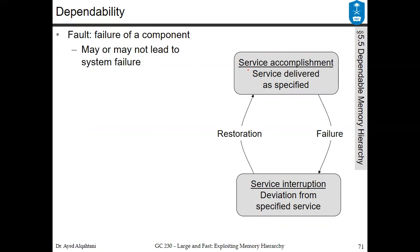You can actually understand the dependability if you look at this sketch where you have a service accomplishment — the service is delivered as specified if you are in this box. In case a failure happens, you will move from the service accomplishment to the service interruption, and this is a deviation from the specified service. Usually what you are doing here is trying to fix the system, and once you're done fixing the system, this is a restoration and you go back again to the state where you can deliver the service again.